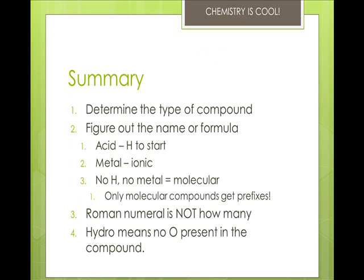Remember: first, determine the type of compound — whether it's ionic or molecular. Then figure out the name or formula. Acids always have hydrogen at the beginning. Metals always mean it's ionic. No H and no metal equals a molecular compound. Only molecular compounds use prefixes like hepta, penta, and hexa. The Roman numeral is not how many — it's the charge on the transition metal. And hydro means there's no oxygen present. There is a lot of practice available on the Moodle site — please do it, as it will help you tremendously for the rest of the semester. Feel free to check with me during office hours. Have a fantastic day.